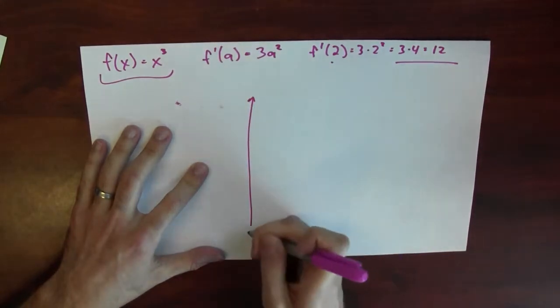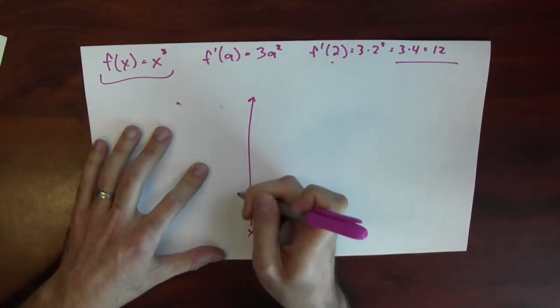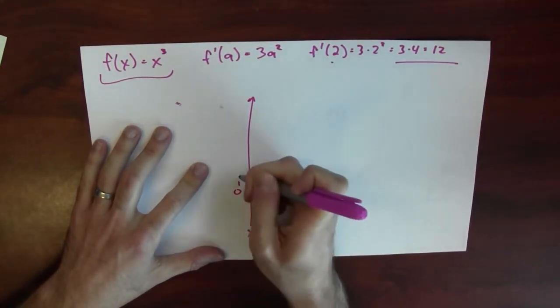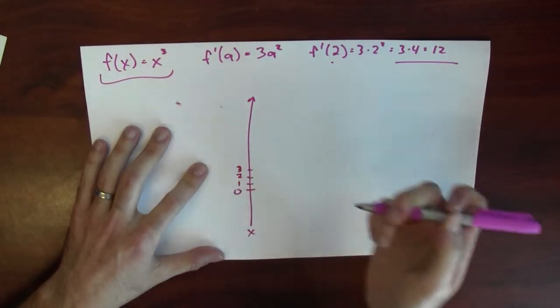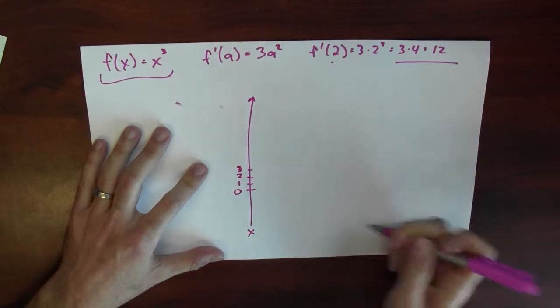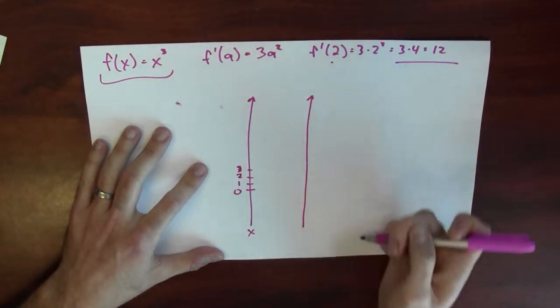So here's say some x's. Here's 0, here's 1, here's 2, here's 3, and it would keep on going.